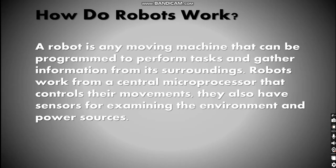How do robots work? A robot is any moving machine that can be programmed to perform tasks and gather information from its surroundings. Robots work from a central microprocessor that controls their movements. They also have sensors for examining the environment and power sources.